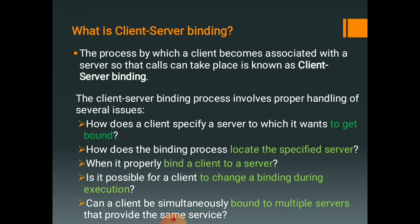The client-server binding process involves proper handling of several issues: How does a client specify a server to which it wants to get bound? How does the binding process locate the specified server? When does it properly bind a client to a server? Is it possible for a client to change a binding during execution? Can a client be simultaneously bound to multiple servers that provide the same services?